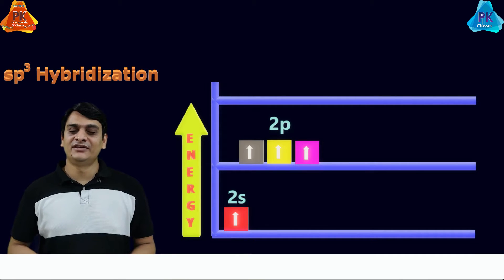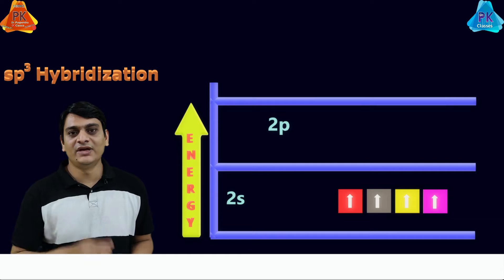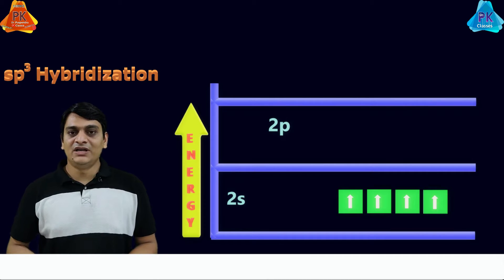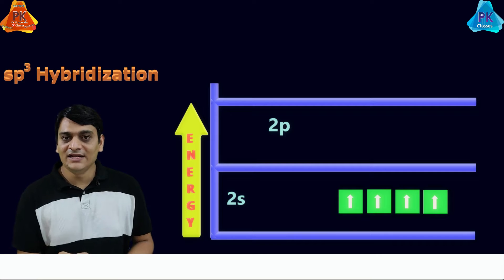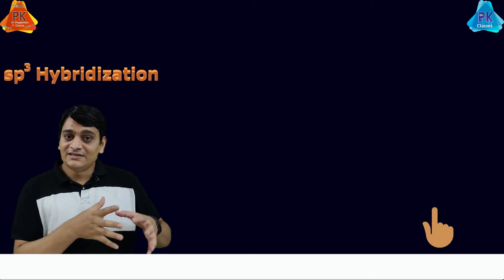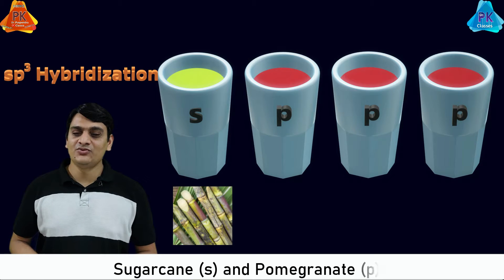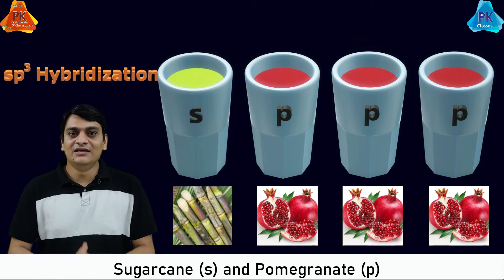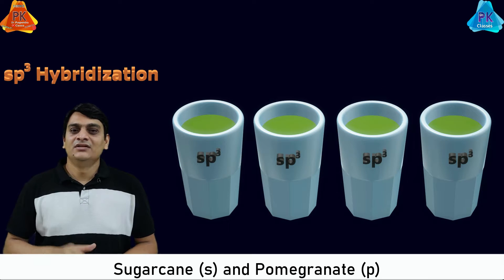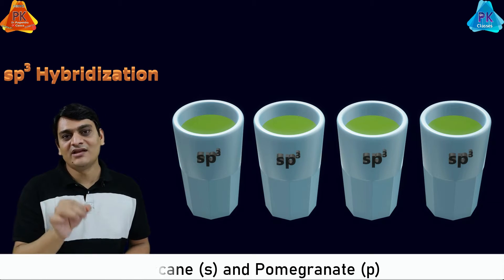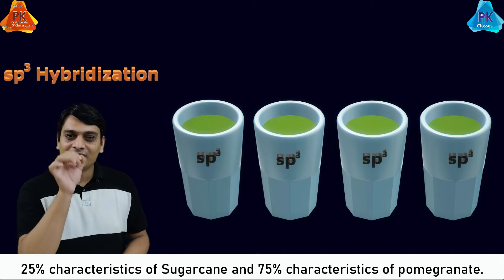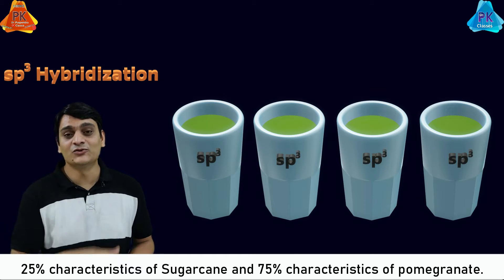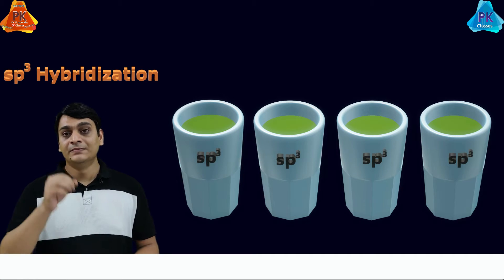In sp3 hybridization, all 4 orbitals — 2s, 2px, 2py, and 2pz — are mixed together to form hybrid orbitals, shown here in green, each containing 1 electron. This is similar to mixing 1 glass of sugarcane juice with 3 glasses of pomegranate juice: after mixing and redistributing, you get 4 glasses of juice with 25% sugarcane and 75% pomegranate characteristics. sp3 hybridization works the same way.